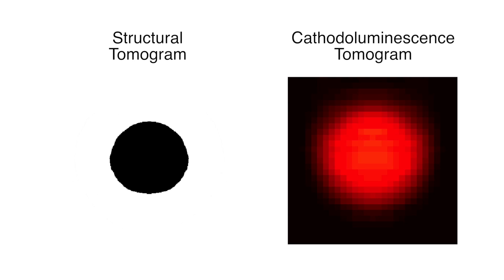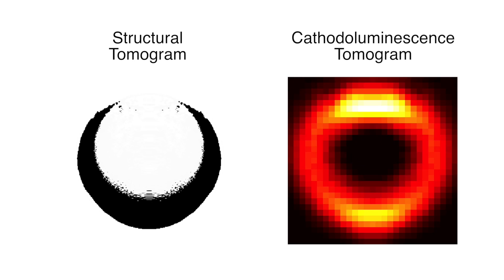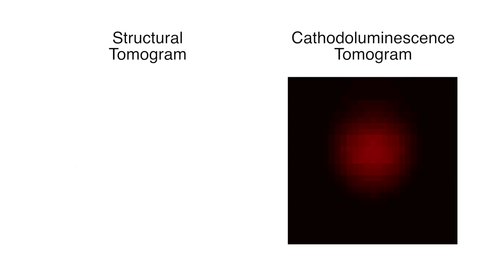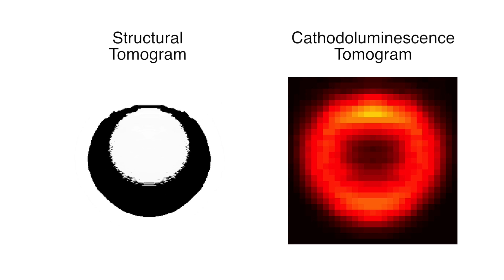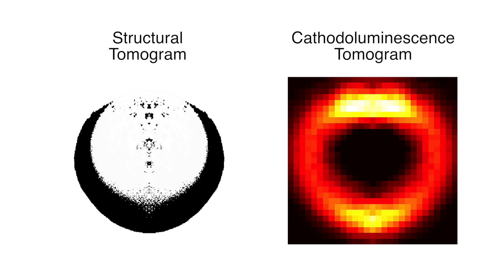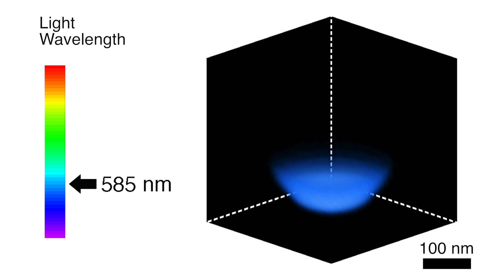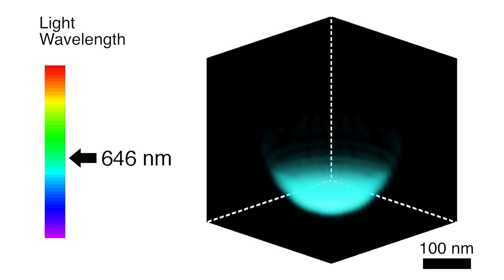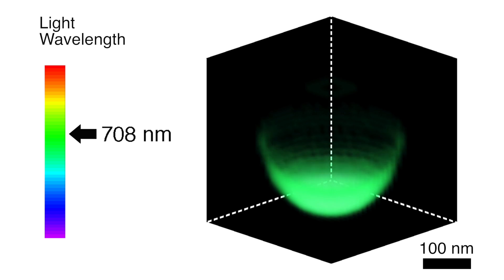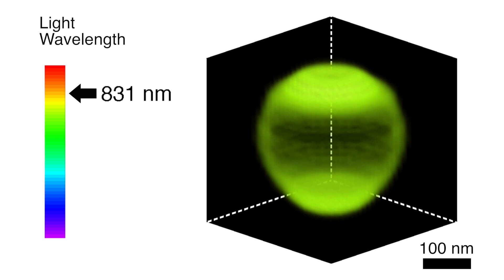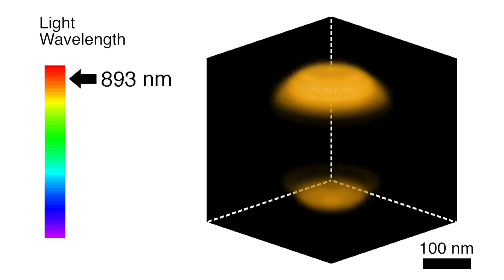Here's a cathodoluminescence tomogram next to a structural tomogram like the one we saw earlier. The cathodoluminescence tomogram shows us what parts of the crescent light up under the electron beam. Using information about the color of light emitted, as well as what part of the particle is emitting, we can make a different kind of 3D reconstruction that helps us visualize this particle in a new way with nanoscale resolution across visible and near-infrared frequencies.